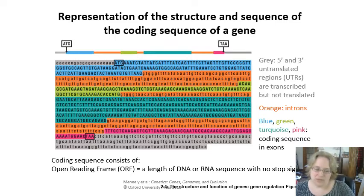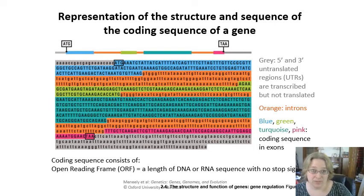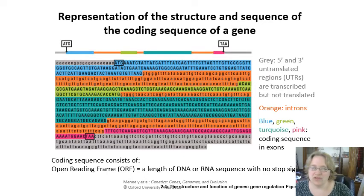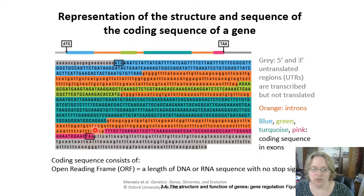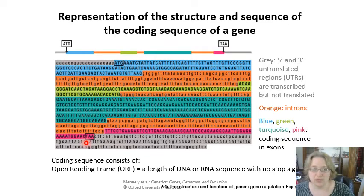The coding sequence is an open reading frame, or ORF. It's the length of DNA or RNA that doesn't have any stop signals. It begins with ATG at the very start and ends with TAA here — which becomes UAA in the mRNA — and that's one of the three stop codons.